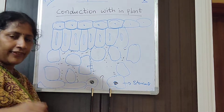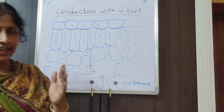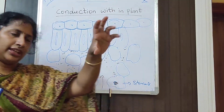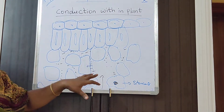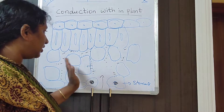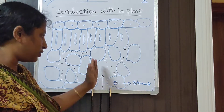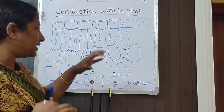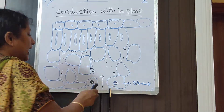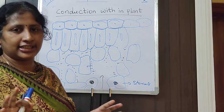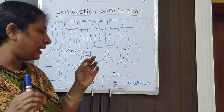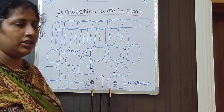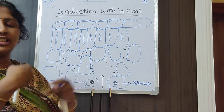To summarize: stomata are openings present in the leaves through which gas exchange takes place. Air enters through the stomata. After entering, there are interstitial spaces in between the cells. The air fills these spaces. Outside the cells, a thin water film is present, and the air gets dissolved in that water.